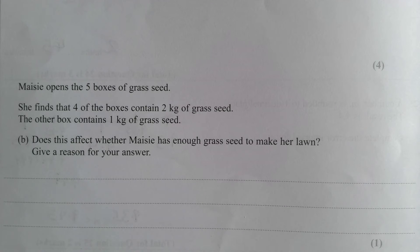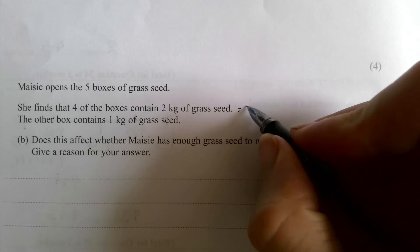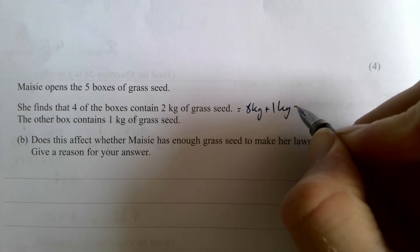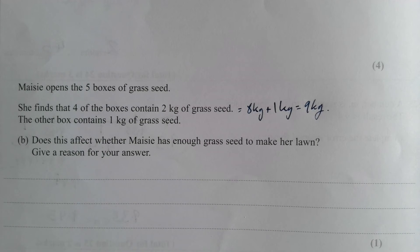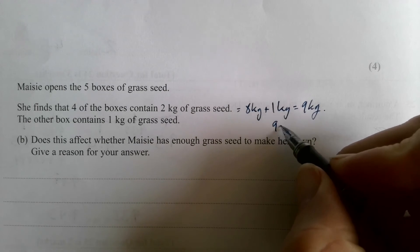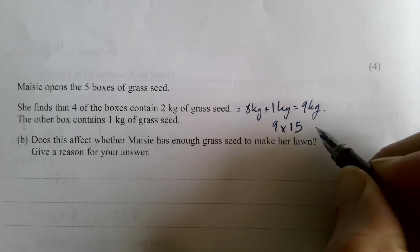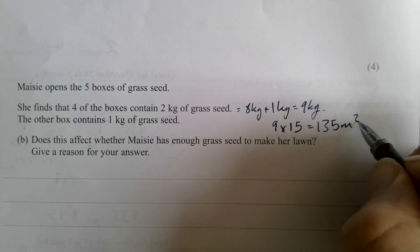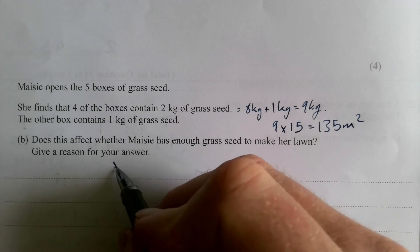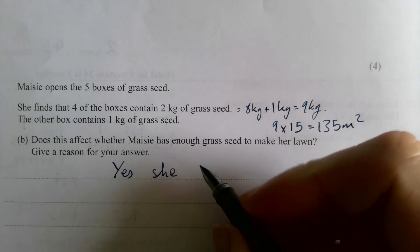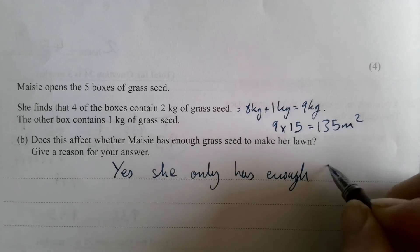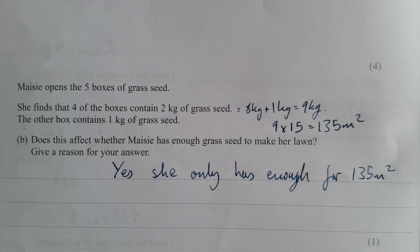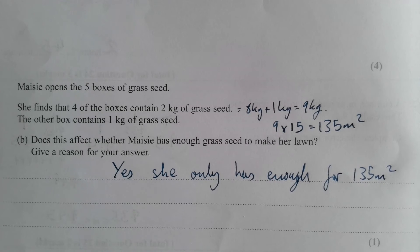Right, she finds that four of the boxes contain two kilograms. So that is eight kilograms plus one is nine kilograms. So does this affect, she's only got nine kilograms instead of 10. And in fact, nine times, what was it, it was 15 per kilogram, wasn't it, is 135 square meters. Does this affect whether she has? Yes. She only has enough for 135 square meters. But as long as you say yes, it does, because she doesn't have as much seed, you should still get a mark.